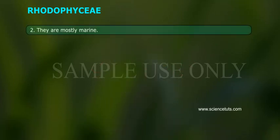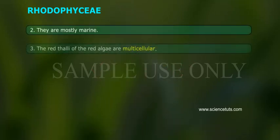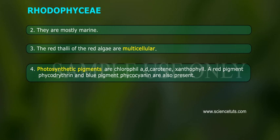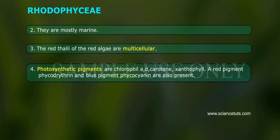They are mostly marine. The thallus of red algae is multicellular. Photosynthetic pigments are chlorophyll A and D, carotin, and xanthophyll. A red pigment, phycoerythrin, and a blue pigment, phycocyanin, are also present.